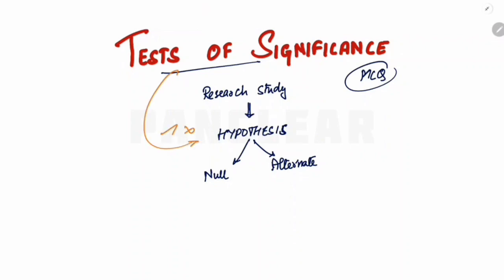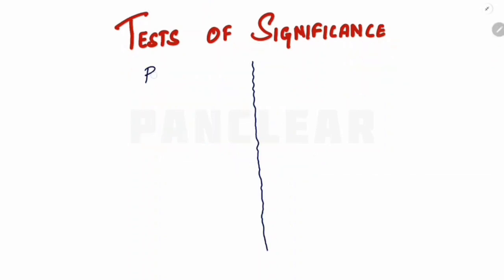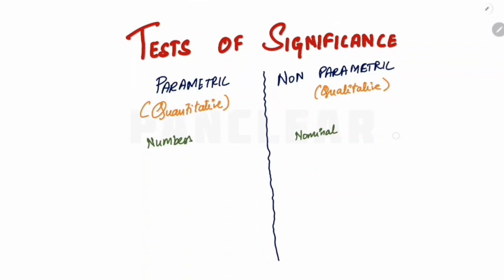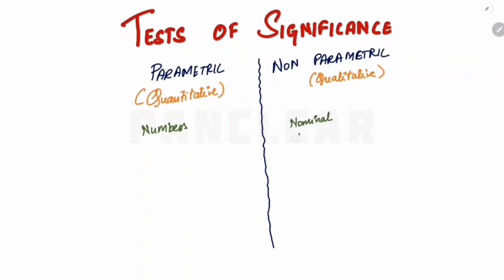The broader test of significance can be parametric or non-parametric. Parametric tests have something to do with numericals — they are also called quantitative tests. Whereas non-parametric tests are called qualitative tests. So data in parametric tests consists of numbers or values, while in non-parametric it is nominal — in the form of names or categories.